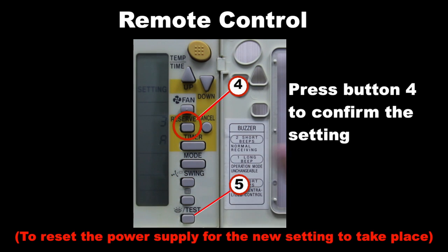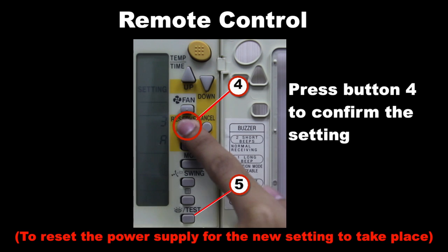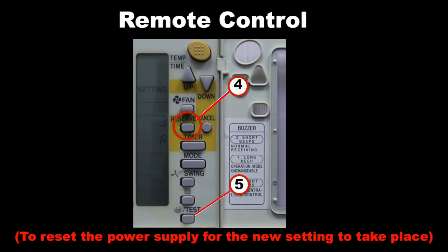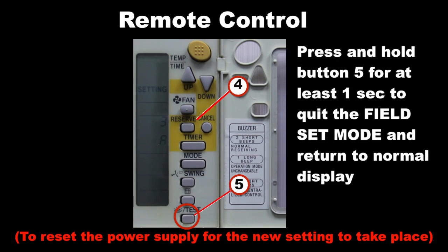Press button 4 to confirm the setting. Press and hold button 5 for at least 1 second to quit the field set mode and return to normal display.